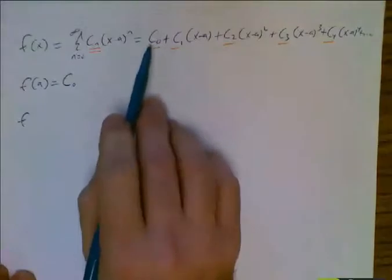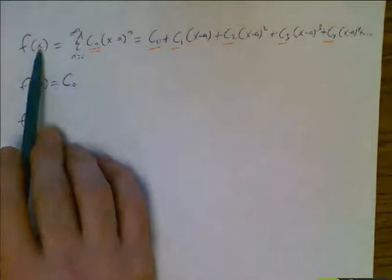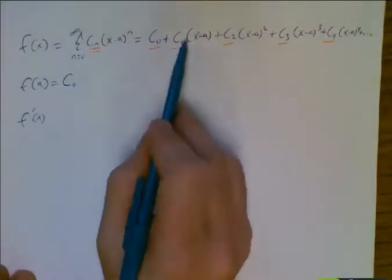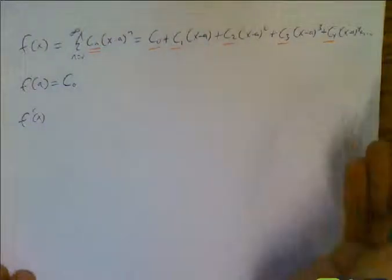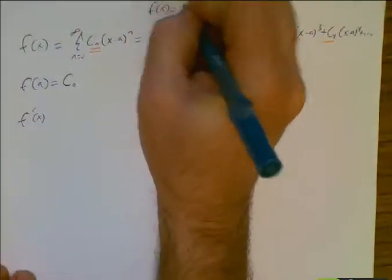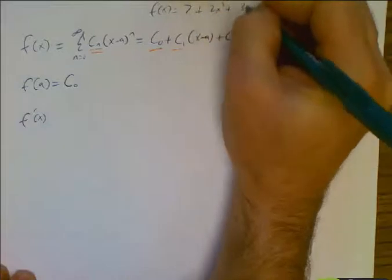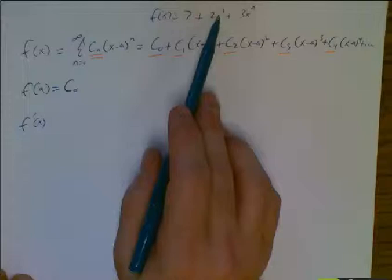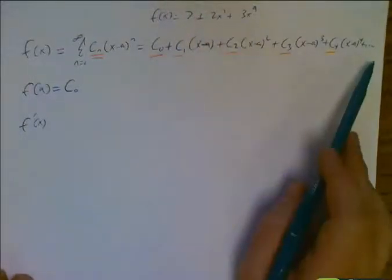So let's take the derivative of this series, which is the derivative of this function, but I can take the derivative of this series single term by single term because this is just a polynomial. If I asked you, if I said f of x equals seven plus two x squared plus three x to the ninth and said take the derivative, you would do, okay, a derivative of seven, derivative of two x squared, derivative of three x to the ninth, no problem. We're going to do the same thing here.